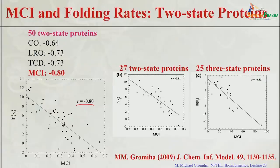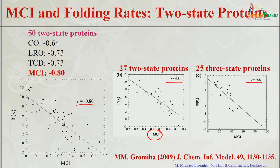To verify this, we used another 27 two-state proteins under the same experimental conditions discussed at the beginning of the lecture. There too, a similar correlation of about minus 0.81 was obtained, meaning MCI is a good measure to relate protein folding rates. Using the same approach with 3-state proteins also yielded a correlation of 0.83, confirming MCI as a good measure for predicting folding rates.